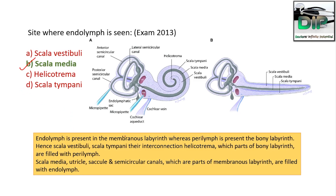Endolymph is present in the membranous labyrinth — shown as the dark color in the figure. Perilymph is present in the bony labyrinth — the lighter color. The Scala vestibuli, Scala tympani, and the interconnection Helicotrema are parts of the bony labyrinth and contain perilymph. The inner part, Scala media, along with the utricle, saccule, and semicircular canals, contains endolymph.